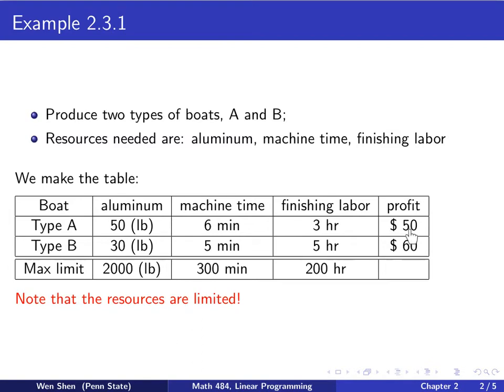Type A is requiring more machine work. And then this is the fourth column, about finishing labor. Type A requires 3 hours, and type B is more labor intensive, it requires 5 hours. And the last column is the profit. If you make one boat of type A and sell it or give it to the distributor, the profit you make is $50. And for type B, you profit a bit more, you have a $60 profit.